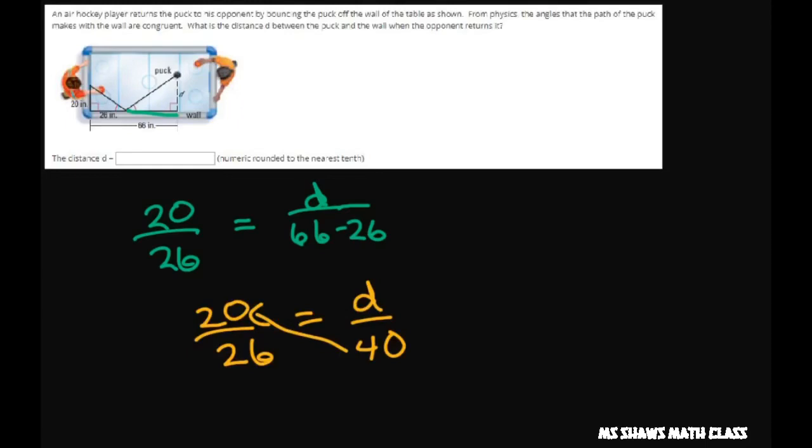And you get 40 times 20, so that's going to be 800 divided by 26 equals D. So divide 800 by 26 and you get 30.769.